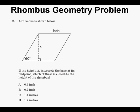Let's read the problem. A rhombus is shown below. If the height h intersects the base at its midpoint, which of these is closest to the height of the rhombus?